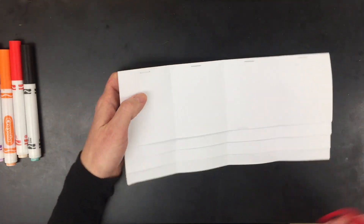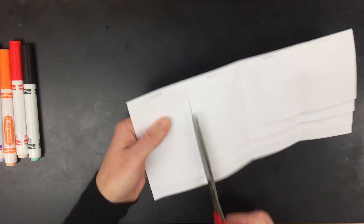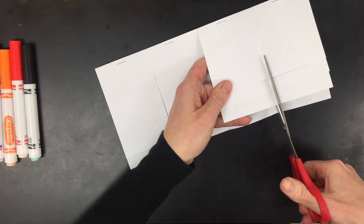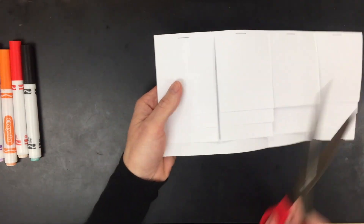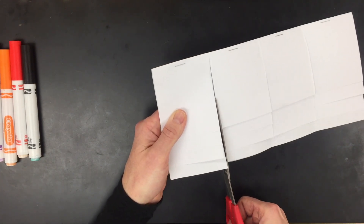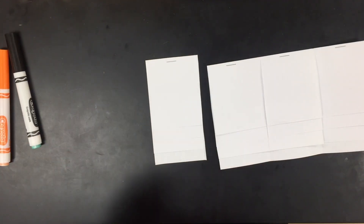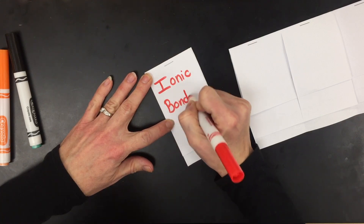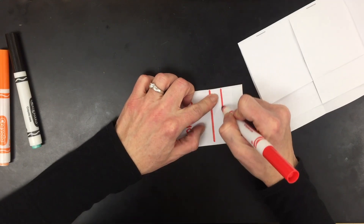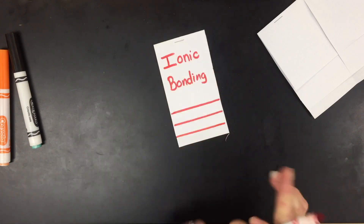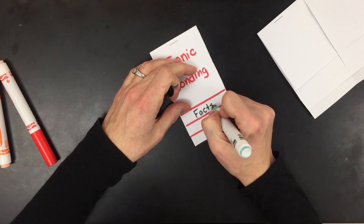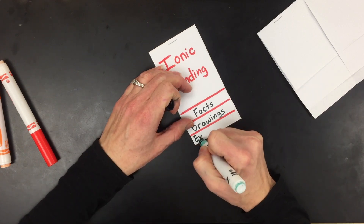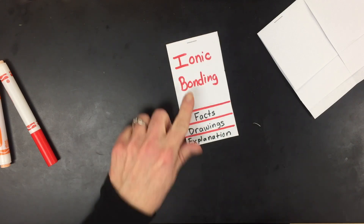Decide if you want to keep the sections intact or cut them. If cutting, you'll cut just those sections free — only the top three sheets get cut for each one. After cutting, label them. If you choose to cut them completely free, cut through the whole thing. Then label the four types of chemical bonding — the first being ionic bonding. I highlighted right underneath where the folds were, and that's where I labeled the facts, the particulate drawings, and the written explanation for each bond type.